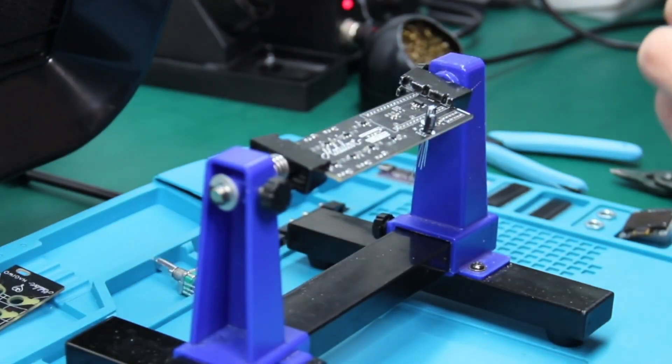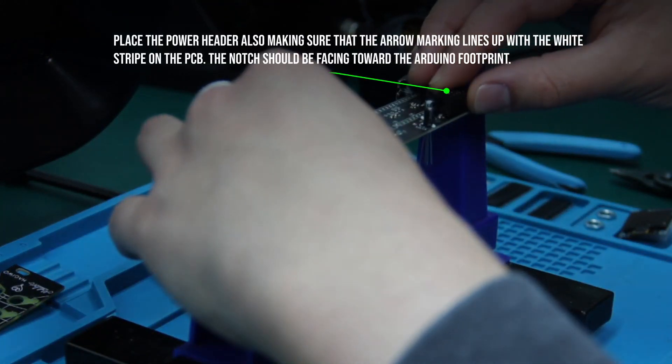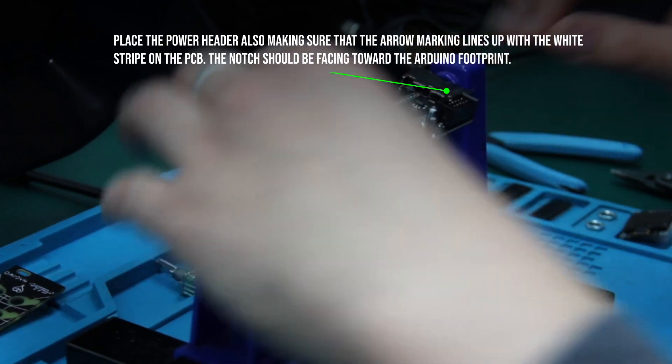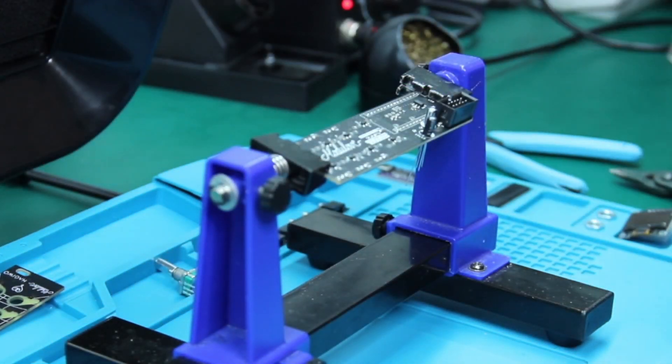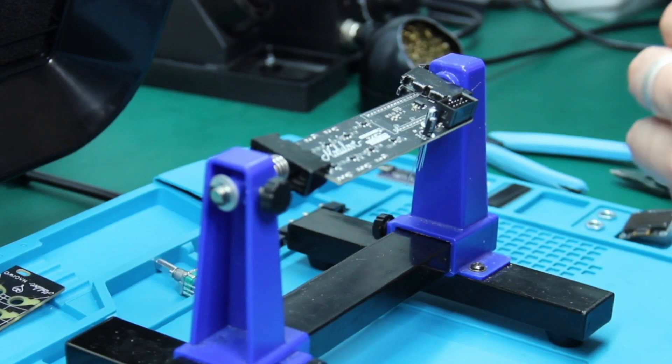Now you can go ahead and place the power header, making sure that the arrow lines up with the white line on the PCB. Note that the notch should be facing the Arduino Nano footprint.